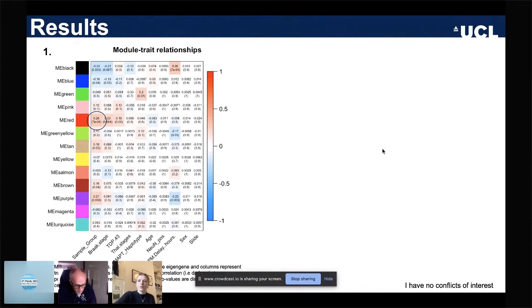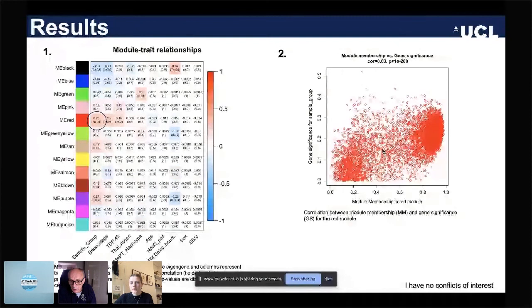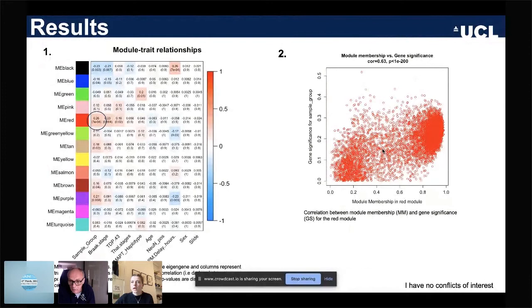We also looked at correlation between module membership in the red module and gene significance. Module membership is effectively a measure of how much a gene belongs to a module, and gene significance is the correlation between CpG-specific methylation levels and disease status.